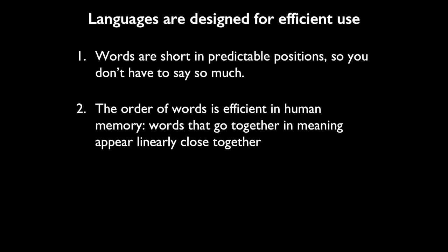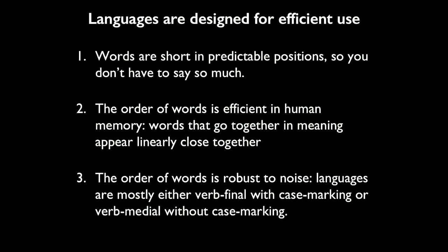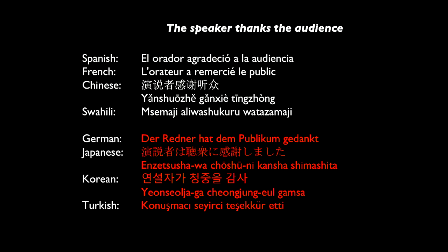Contrary to popular belief in the old linguistics literature, languages do seem to be designed for efficient use, and I've given you three ways that might be the case. First, words are short in predictable positions — I only have to say long words in very unpredictable locations. Second, the order of words is efficient for human memory — words close in meaning usually appear linearly close together, and that's true across all languages. And finally, the order of words is robust to noise — languages are mostly either verb-final with case marking or verb-medial without. Thank you.